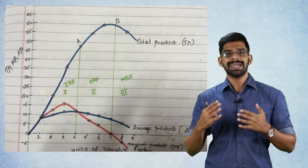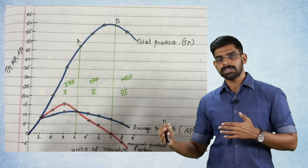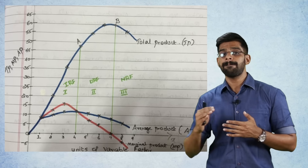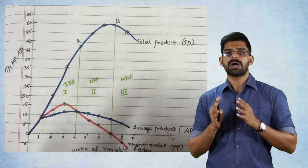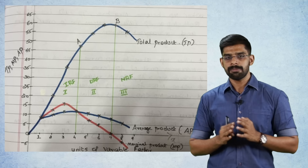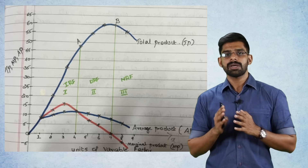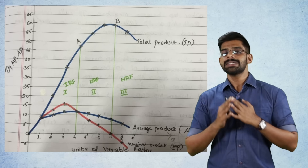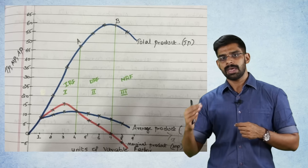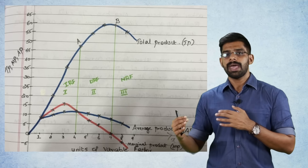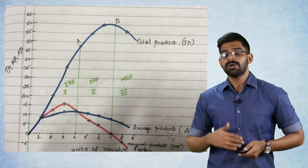The final stage is Negative Returns to Factor. In the third stage, when MP becomes negative, your AP falls but remains positive, and your TP starts falling but remains positive. So AP and TP are positive — it is only MP which turns negative. To summarize, three stages are: increasing, diminishing, and negative. First stage: AP equals MP. Last phase of second stage: MP equals zero, TP is maximum, AP falls. Third stage: MP becomes negative, AP falls, and TP for the first time starts falling but stays positive.